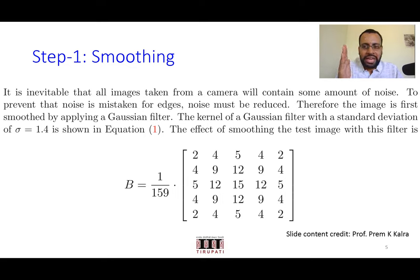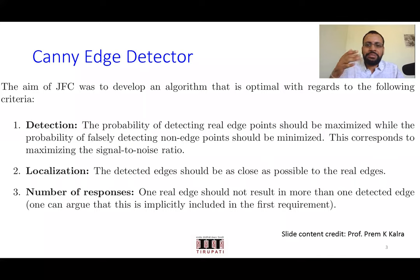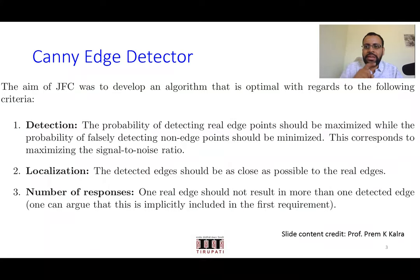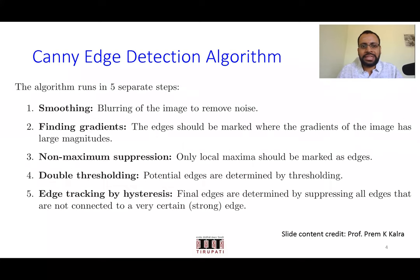The goal of Canny is to find edges with certain properties. If it is a real edge point, the probability of finding it should be maximized. If it is a false edge — due to reflection, noise, or viewpoint — the probability of detecting it should be minimized. And for a ramp edge, you could get multiple responses when applying a gradient and threshold, so it wants to minimize the number of responses for a real edge.